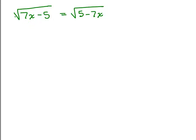Here's a problem where we have a square root on one side equaling the square root on the other side. So we could just square both sides because they're both isolated in this case. And we get what's underneath the radical, 7x minus 5, equals 5 minus 7x.